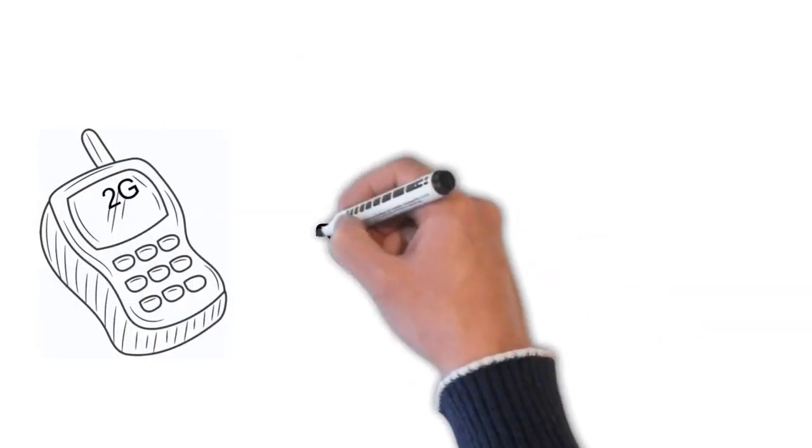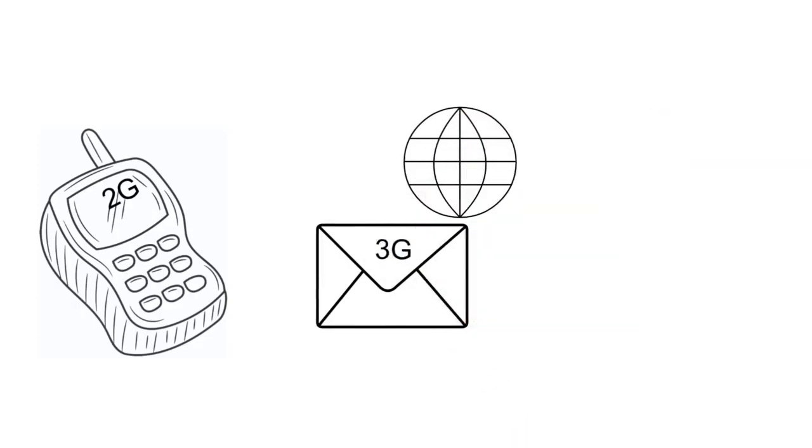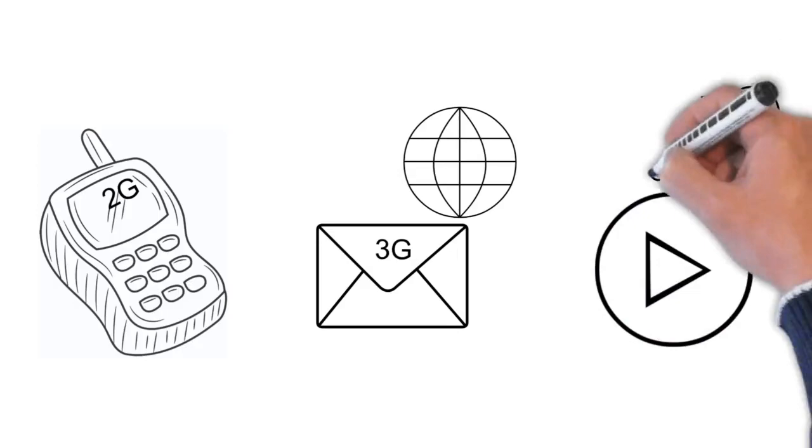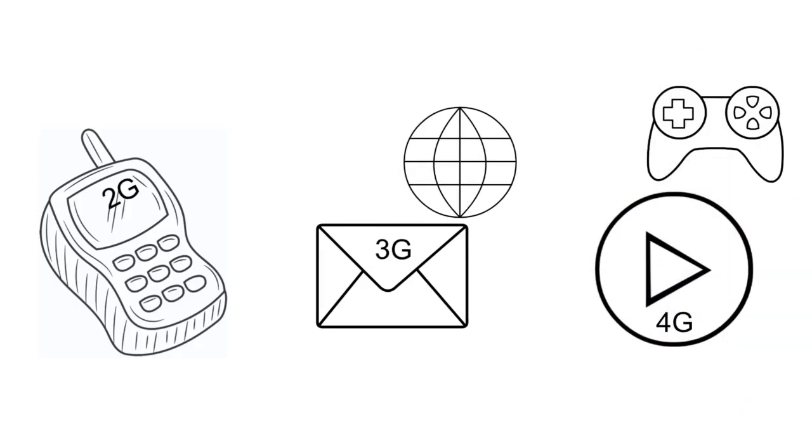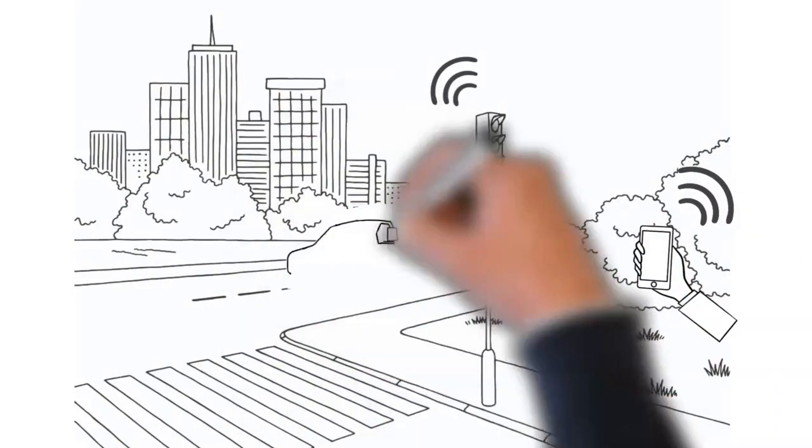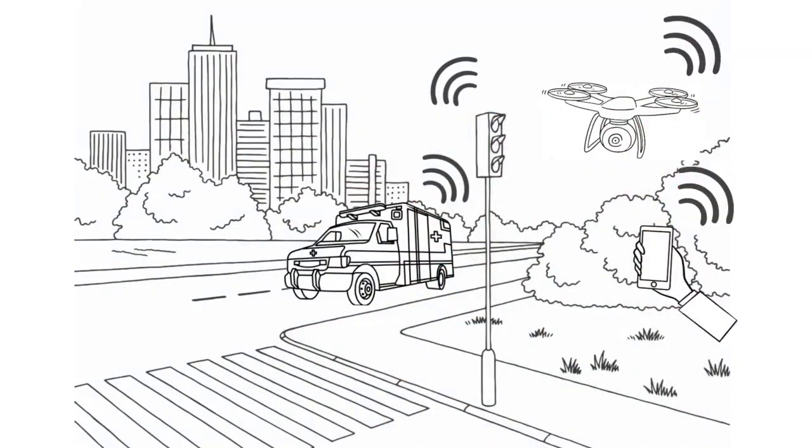2G enabled voice calls. 3G enabled access to the internet for functions such as email and web browsing. 4G had higher download speed and lower latency than previous generations, enabling video streaming and multiplayer gaming on handheld devices. 5G, the fifth generation network, is capable of all this with the added benefits of instant response and huge data for connecting devices like autonomous vehicles and drones.